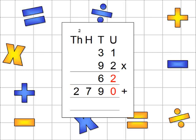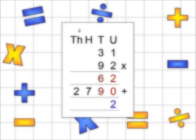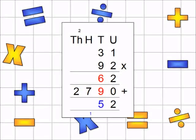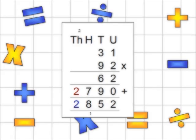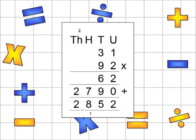In the final part of the question, add up your two new answers by column addition. 2 plus 0 is 2. 6 plus 9 is 15, with the 5 in the tens column and the 1 going underneath the hundreds column. Next, add 7 plus 1 equals 8. Then, in the thousands column, the only thing there is a 2, so the answer is 2,000. The final answer is 2,852.